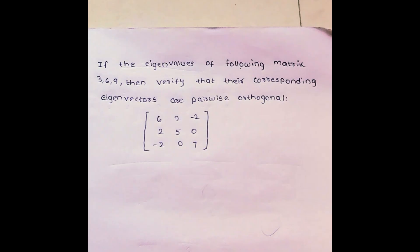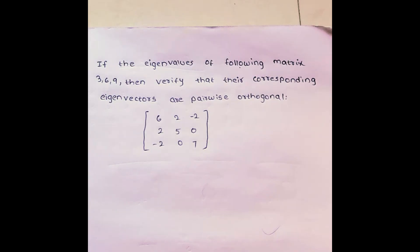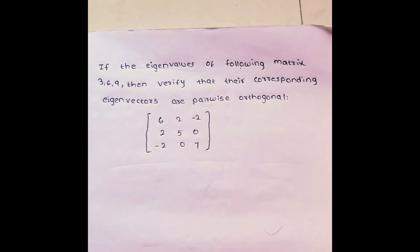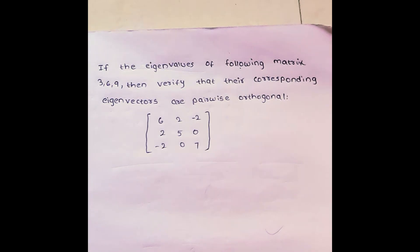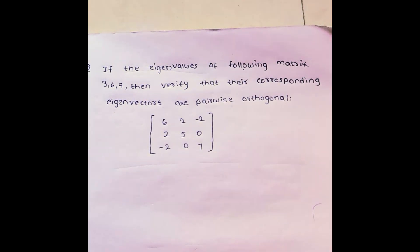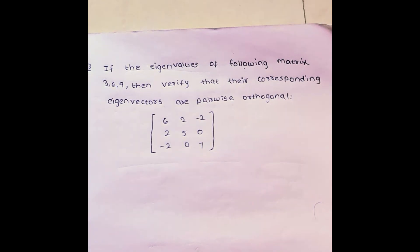What is the question? If the eigenvalues of the following matrix are 3, 6, 9, then verify that the corresponding eigenvectors are pairwise orthogonal, and a matrix is given in the question. Previously, for finding eigenvectors we had to find eigenvalues first, then eigenvectors, and then check linear dependence or independence. But here, after finding the eigenvectors, we have to check whether they are pairwise orthogonal or not. For checking that, we have to do the dot product.